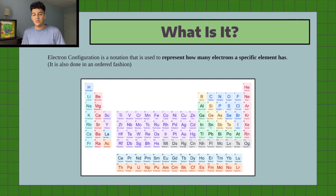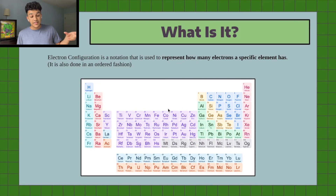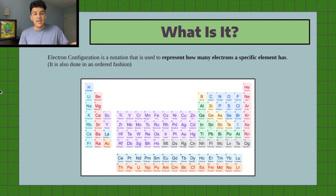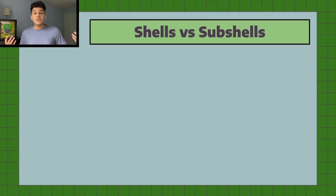So the first topic is what electron configuration is — it's a method used to notate the electrons that a specific element has in an orderly fashion. If we look at the periodic table, each element has an atomic number assigned to it, and that atomic number also reflects the number of electrons that the given element has. Scientists came up with a method to actually order these electrons in a fashion that could be observed under a microscope, and the notation used is exactly what is observed.